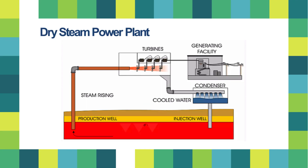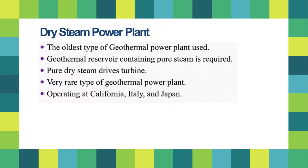Dry steam power plants, illustrated in the diagram below, are the oldest type of geothermal power plant. They require a geothermal reservoir containing pure steam; the pure dry steam drives the turbine. These plants currently operate in California, Italy, and Japan.